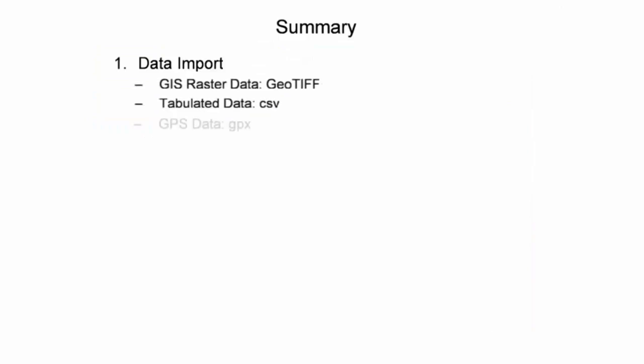This presentation introduced four major types of data imports supported in Google Earth, including GIS raster data, tabulated data, and GPS data. In addition to the default data import styles and symbols, style templates were applied to enhance the user's visual experience.